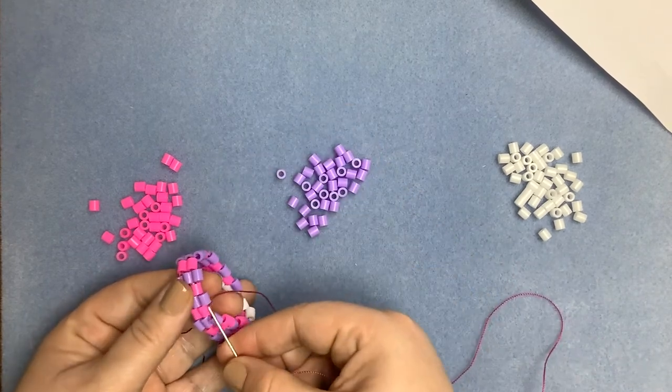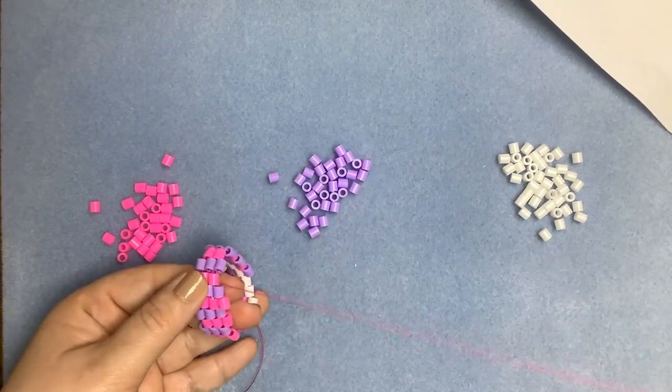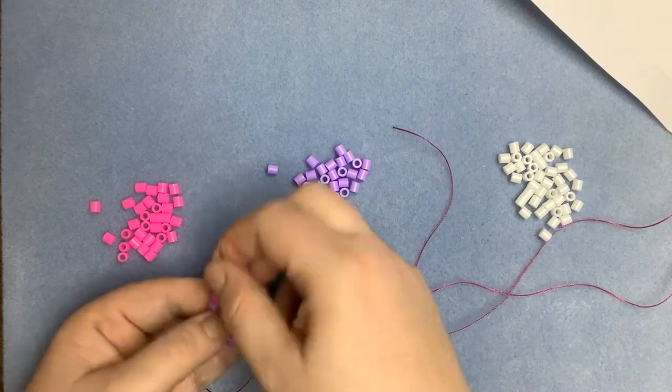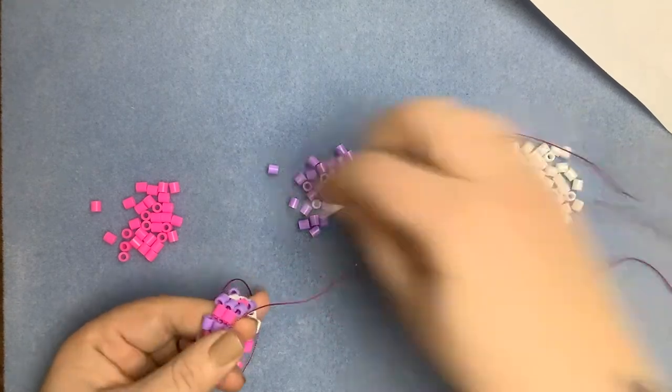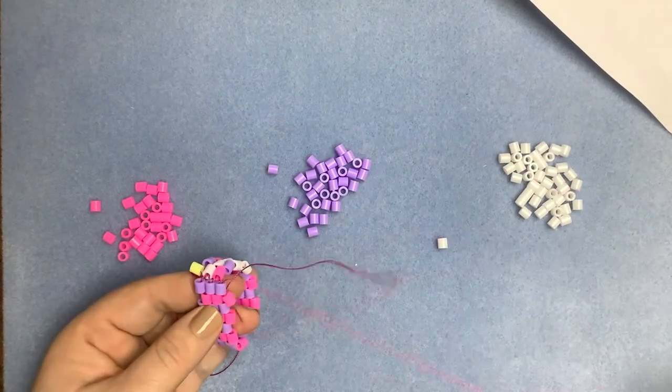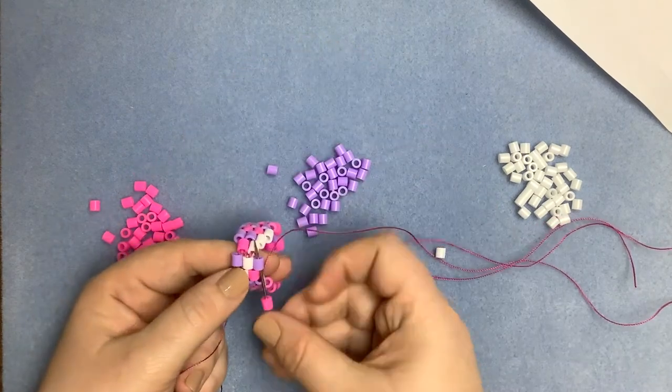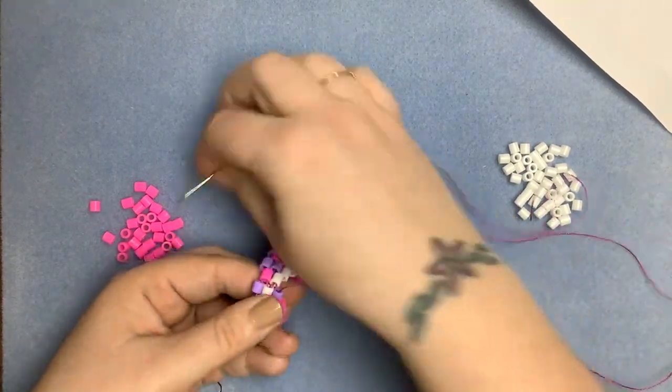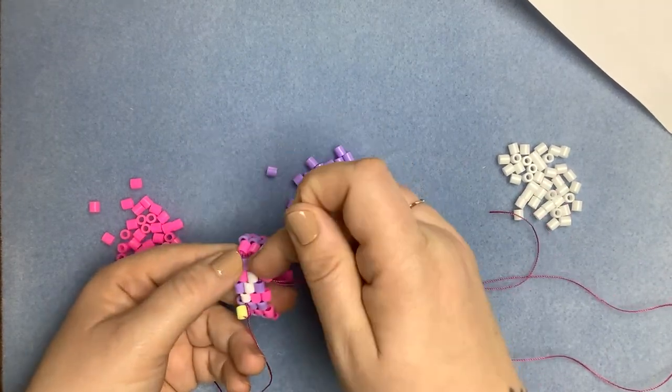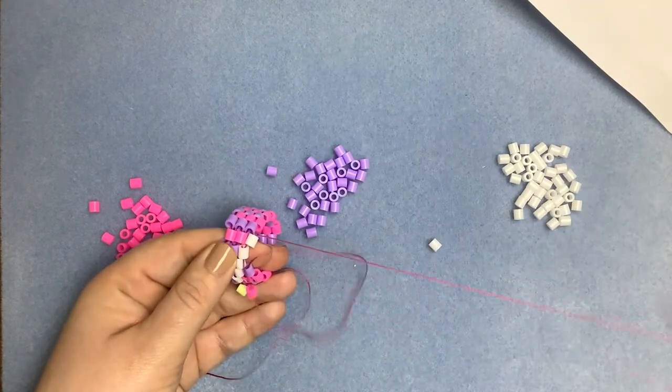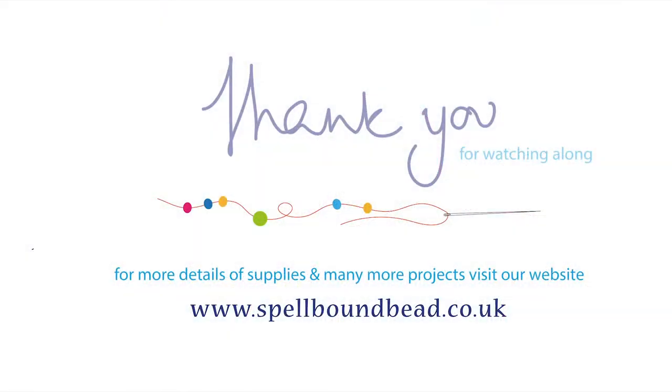If you just need the tubular peyote basics, you've got them here. So I'll just do this one more row just to really reinforce what you need to know for the basics. So here we go, all the way around. Through the last bead of the previous row, and then up through the first bead of this row. And there we go, there is tubular peyote stitch.